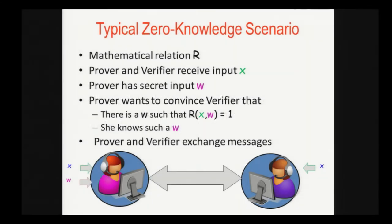You have a mathematical relation r. The prover and verifier receive a logical input x. The prover has additional secret input w, the witness, and the prover wants to convince the verifier that there is a witness that satisfies the relation with x, and possibly that she knows the witness.